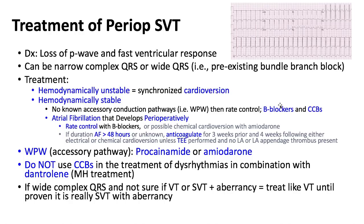In Wolf-Parkinson-White, an accessory pathway bypasses the AV node. For SVT with fast ventricular rate we normally block the AV node, but in WPW we must target the accessory pathway with drugs like procainamide or amiodarone. Calcium channel blockers should not be used when treating dysrhythmias in combination with dantrolene — combining dantrolene with diltiazem can result in arrest and hyperkalemia. For wide complex QRS where you're unsure if it's V-tach or SVT with aberrancy, treat it as V-tach until proven otherwise.